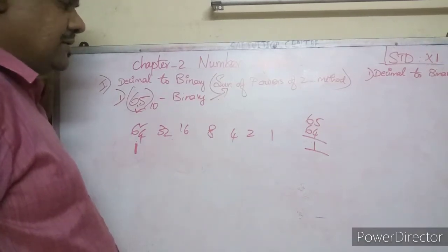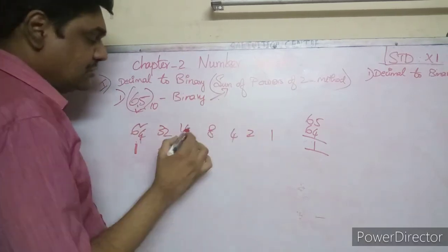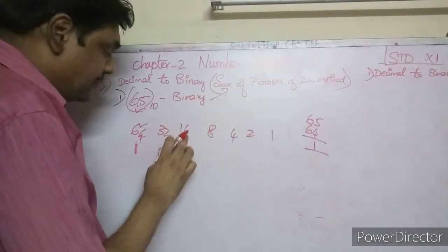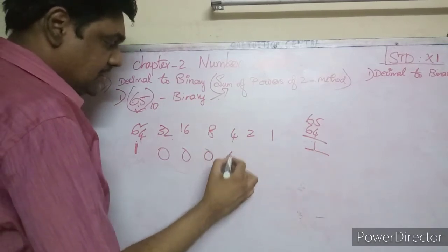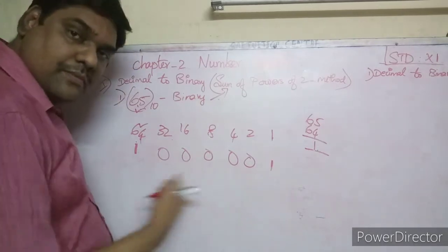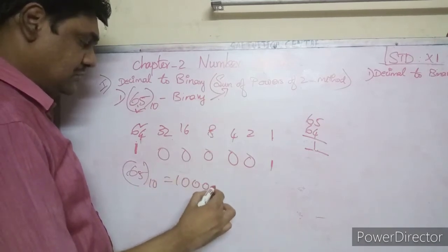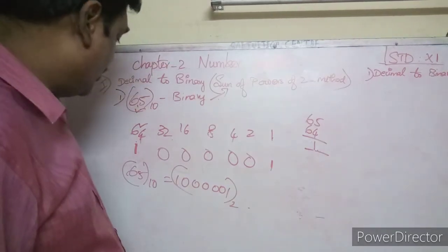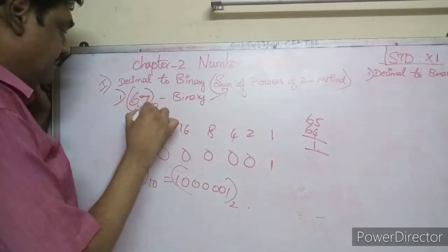Compare 65 and 64: put a 1. Subtract 64 from 65, remainder is 1. Then 32 is greater than 1, so put 0. 16 is greater than 1, so put 0. 8 is greater than 1, so put 0. 4 is greater than 1, so put 0. 2 is greater than 1, so put 0. 1 equals 1, so put 1. Therefore, 65 base 10 is equal to 1000001 base 2.